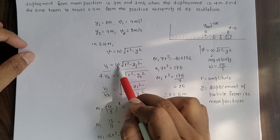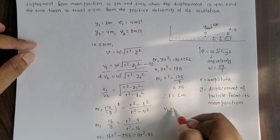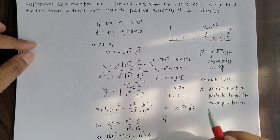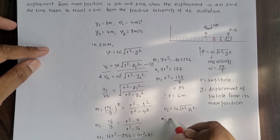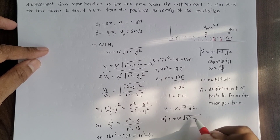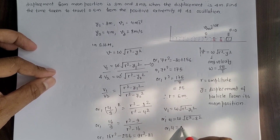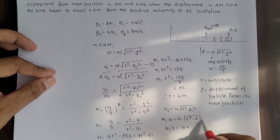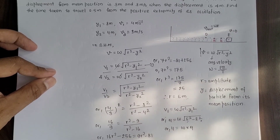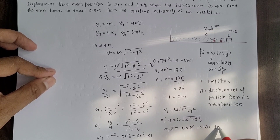Now putting r = 5 meter into equation 1 to find ω: v₁ = ω√(r² - y₁²), so 4 = ω√(5² - 3²) = ω√(25 - 9) = ω√16 = 4ω. The 4s cancel, giving ω = 1 radian per second.